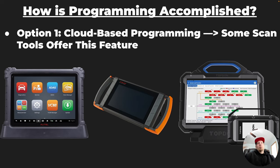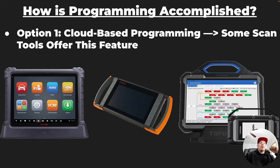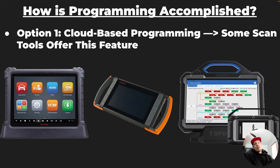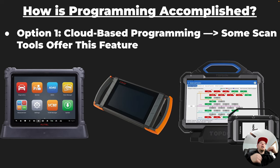Now, how is programming accomplished? There are essentially four different ways. Option one is cloud-based programming. Many aftermarket scan tools have this as an optional subscription-based feature — you need a valid, active subscription to have access to a programming database. These cloud-based programming databases are a collection of software files for various vehicle manufacturers residing on a centralized server. Autel has something like this, iScan has something like this, Topdon has something like this, and other scan tool manufacturers as well. But can you program every car — every VW, every BMW? No, you cannot.